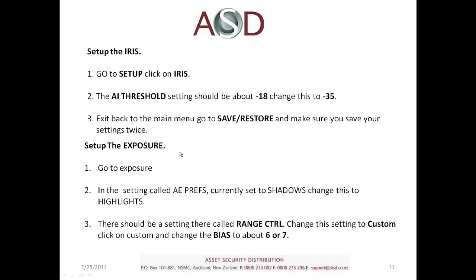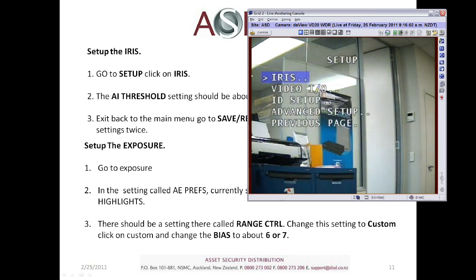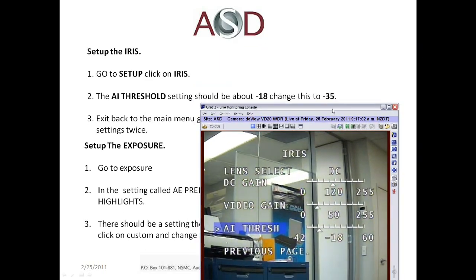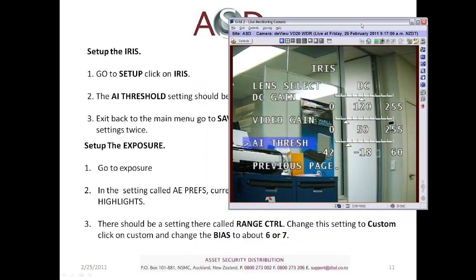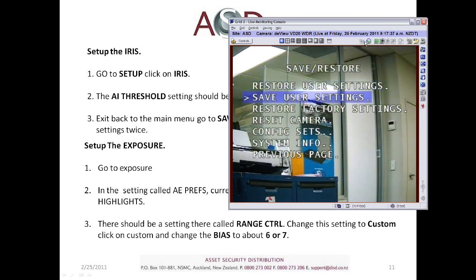Now we want to adjust the iris. Come down to Setup, click on Iris, and come down to the AI Threshold. The AI Threshold should be about minus 18 by default — we need to change this to about minus 35. What this does is, in extreme lighting conditions, it will stop the camera from hunting. If you've set up this camera in a really extreme lighting condition, you may see it flashing from light to dark very quickly — that's the chip trying to find the best picture. Setting the AI Threshold to minus 35 will stop that hunting. Once set, go back to the main menu, click Save and Restore, and save user settings twice.